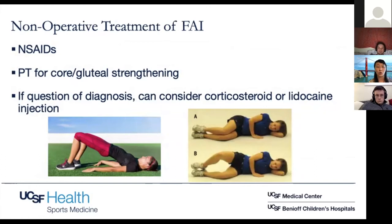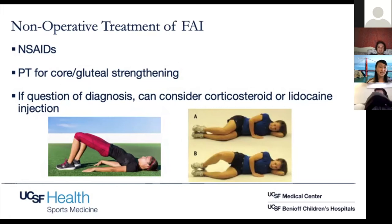Here are some good examples of posterior chain strengthening exercises for glutes, hips, and core — your classic bridge exercise as well as clamshells. A lot of people do get better with non-operative treatment. If you have any question about the diagnosis — maybe hip flexor tendonitis, early arthritis, or lateral trochanteric bursa pain — you can also consider a cortisone or lidocaine injection into the hip joint, done by ultrasound or fluoroscopy guidance, just to help narrow down the diagnosis.